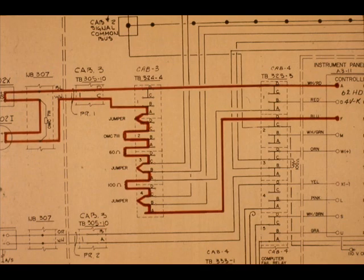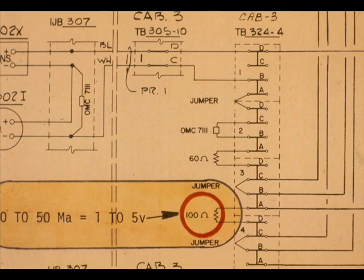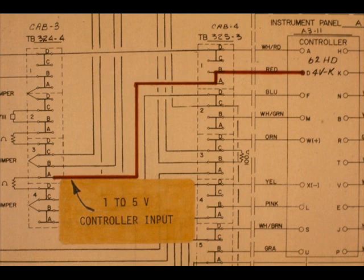The red line traces the 10 to 50 milliamp current path from pin F to pin A. Notice the 100 ohm resistor located on TB324-4. The 10 to 50 milliamp input current passing through this 100 ohm resistor will produce 1 to 5 volts. The 1 to 5 volt signal goes to controller pin D. This is the controller process input.